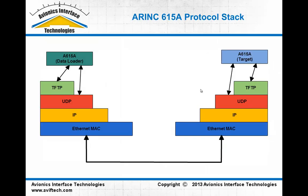The protocol stack — on each side here is what it looks like on the data loader side as well as on the loadable target side. It's basically the same from the file transfer protocol down. At the bottom, we have an Ethernet MAC type of interface, or if it's ERINC-664, an AFDX or ERINC-664 layer at layer 2 and layer 1. Above that, standard Internet Protocol (IP), then UDP, and above that, Trivial File Transfer Protocol for file transfers. The 615A block on each side is a different color, signaling that the protocol handling on the data loader side is different from the target side.